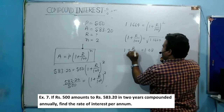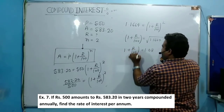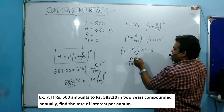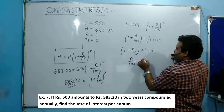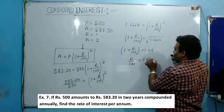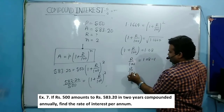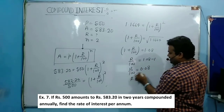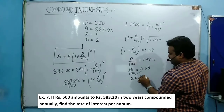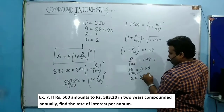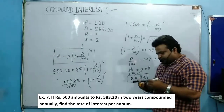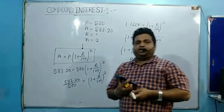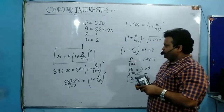From 1 + r/100 = 1.08, we get r/100 = 1.08 − 1 = 0.08. Cross-multiplying gives r = 8%. So the rate of interest is 8% per annum. This is a different kind of problem where you calculate r instead of n.